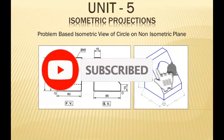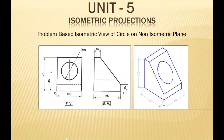Hello friends, today we are going to solve a question which is based on the isometric view of a circle. Today's circle is placed on a non-isometric plane. Till now we have solved problems where the circle is placed on an isometric plane — a plane made up of isometric lines — but here this line is not an isometric line, and the circular cut is placed on this slant surface.